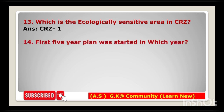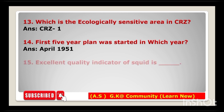Next: the first Five Year Plan was started in which year? It was started in April 1951. Next question: excellent quality indicator of squid is — the answer is NH3.